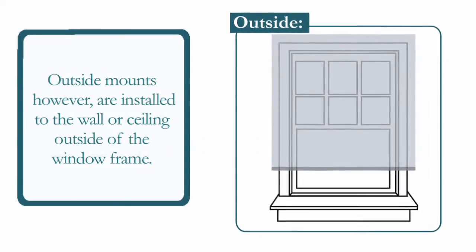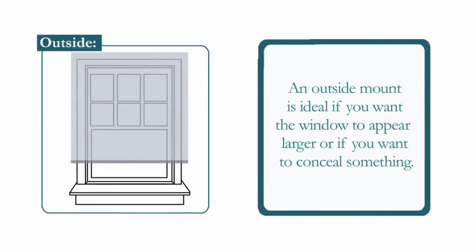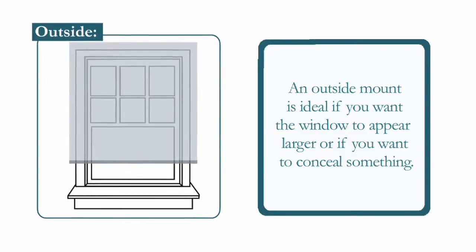Outside mounts, however, are installed to the wall or ceiling outside of the window frame. An outside mount is ideal if you want the window to appear larger or if you want to conceal something.